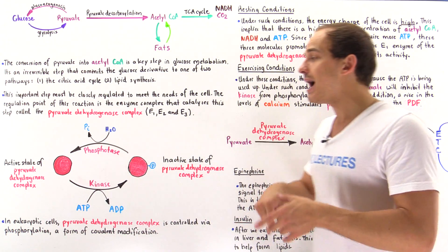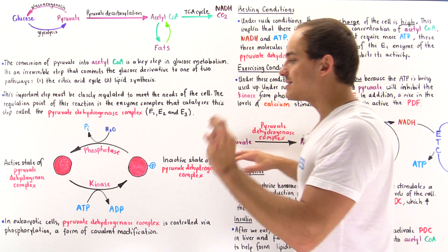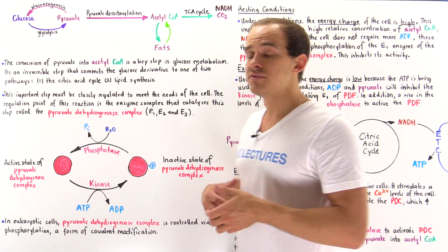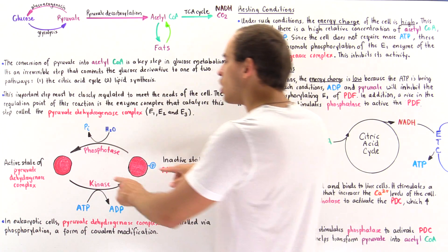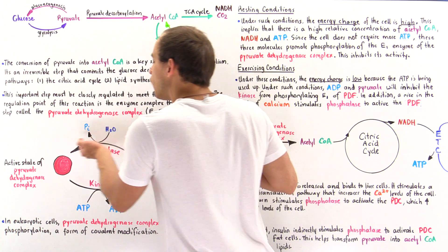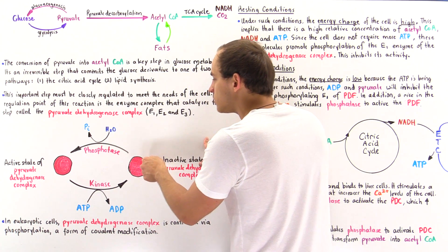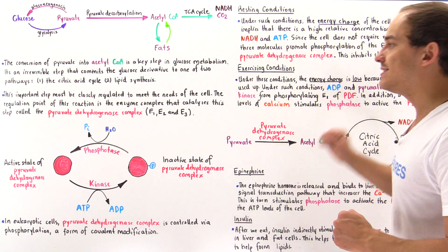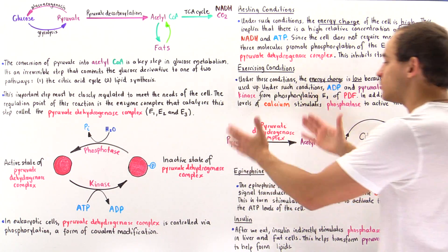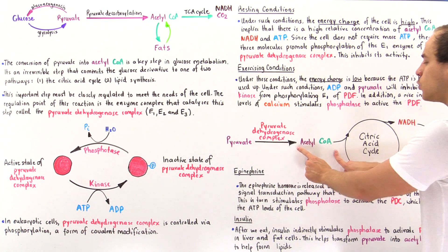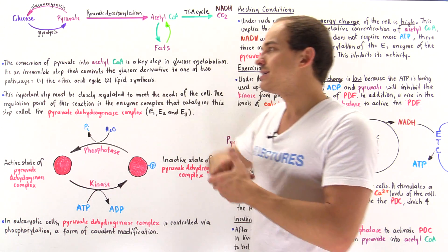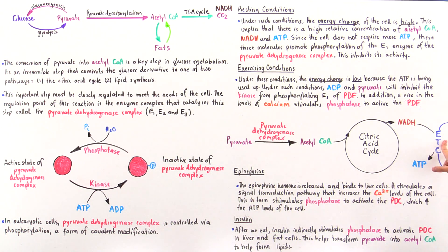Calcium is not only used to contract those actin-myosin filaments, but also by this enzyme. When there is a rise in calcium concentrations in the cytoplasm of the skeletal muscle cells, there's also a rise in calcium levels in the matrix of the mitochondria. That calcium will stimulate the phosphatase to dephosphorylate this molecule — using a water molecule to hydrolyze the bond, releasing that inorganic orthophosphate, and activating our pyruvate dehydrogenase complex. That will continually transform the pyruvate into acetyl-coenzyme A, committing the molecule to undergo the citric acid cycle, which is ultimately used to generate ATP molecules along the electron transport chain.